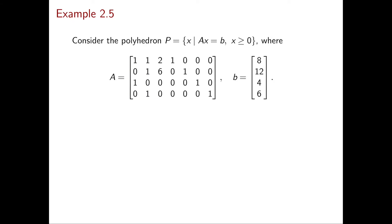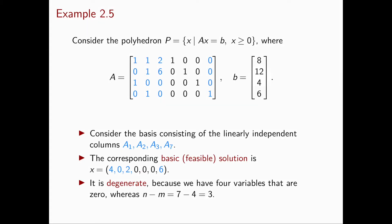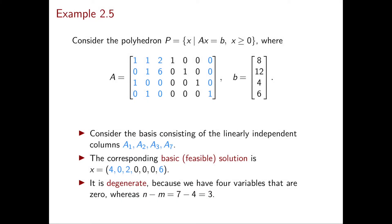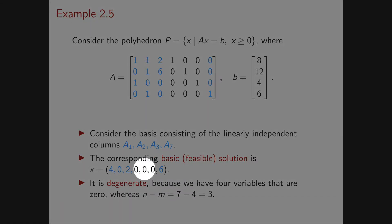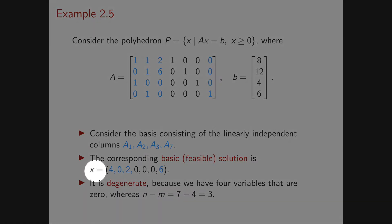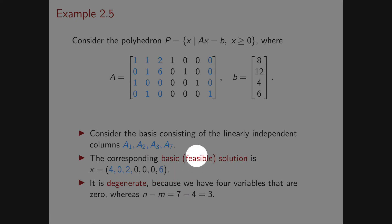Let's see an example of degenerate basic solutions for standard form polyhedra. Our matrix A and vector b are given. Since we have four equality constraints, in order to obtain a basic solution we need to select four linearly independent columns of A. Selecting columns 1, 2, 3, and 7, we set the non-basic variables to zero and solve the remaining system. The corresponding basic solution is (4, 0, 2, 0, 0, 0, 6). Since all components are ≥ 0, this is also a basic feasible solution.